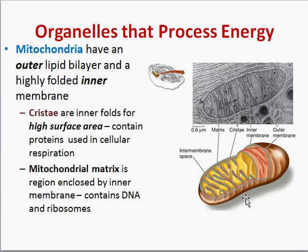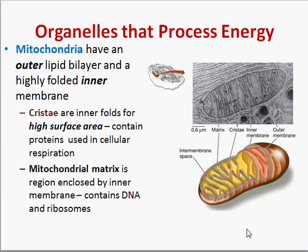The mitochondria has a very unique shape. It has two membranes — an outer membrane and an inner membrane. The inner membrane has folds called cristae, which are important because they increase the surface area. On these folds is where ATP is actually produced, so more folds means more surface and more ATP can be made. The region inside the inner membrane is called the mitochondrial matrix. Interestingly, mitochondria have their own DNA and their own ribosomes, which helps us understand that mitochondria originated as free-living bacteria — their DNA looks like prokaryotic DNA, and their ribosomes look like prokaryotic ribosomes.